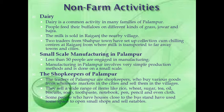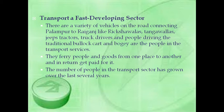Some people who have houses close to the bus stand have used some space to open small shops and sell essential eatables. Transport is a fast-developing sector. There are a variety of vehicles on the road connecting Palampur to Rani Gunj, like auto-rickshaws, tanga-walas, jeeps, tractors, truck drivers and people driving traditional bullock carts and bogies. These people in the transport service ferry people and goods from one place to another and get paid for it. The number of people in the transport sector has grown over the last several years.